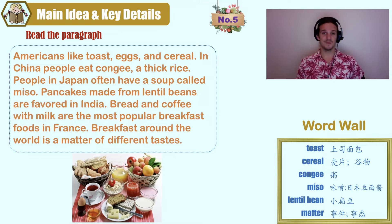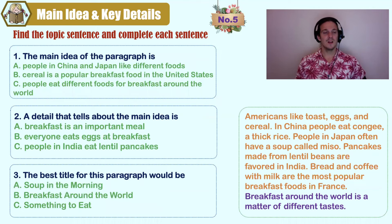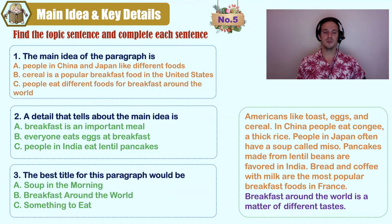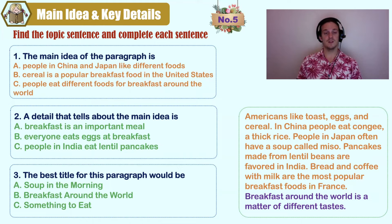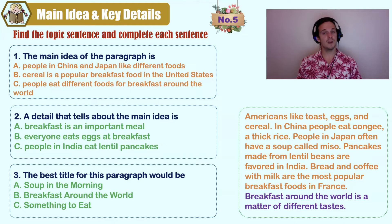What's your favorite breakfast? Mine is lemon water. The main idea: A) people in China and Japan like different foods, B) cereal is a popular breakfast food in the United States, C) people eat different foods for breakfast around the world. A and B are just details. Look at the words in purple: 'Breakfast around the world is a matter of different tastes.' A and B only talk about a few countries, but the article mentions many more. The best answer is C.